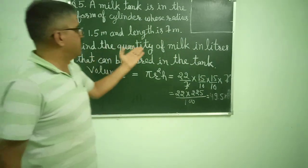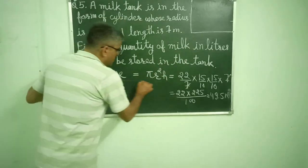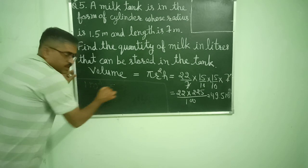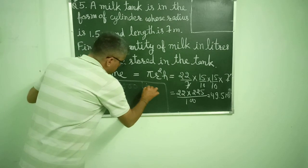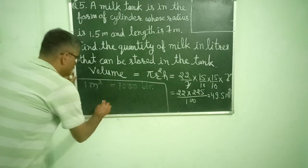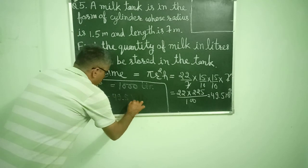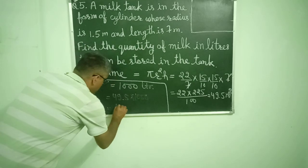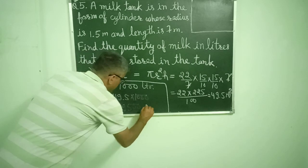Now we have to find the quantity of milk in liters. Now 1 meter cube is equal to 1000 liters. So this is 49.5 meter cube. This will be 49.5 multiplied by 1000. This will be 49,500 liters.